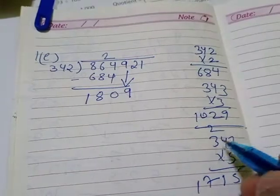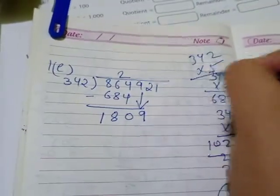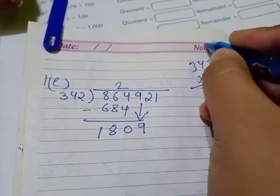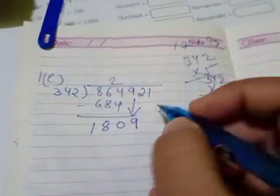Okay, this is 342 into 5 we will see. So 5 2s are 10, 0 here, then 5 4s are 20, 1 carry, 2 carry 15, 16, 17. So I will write here 5 times 1710.